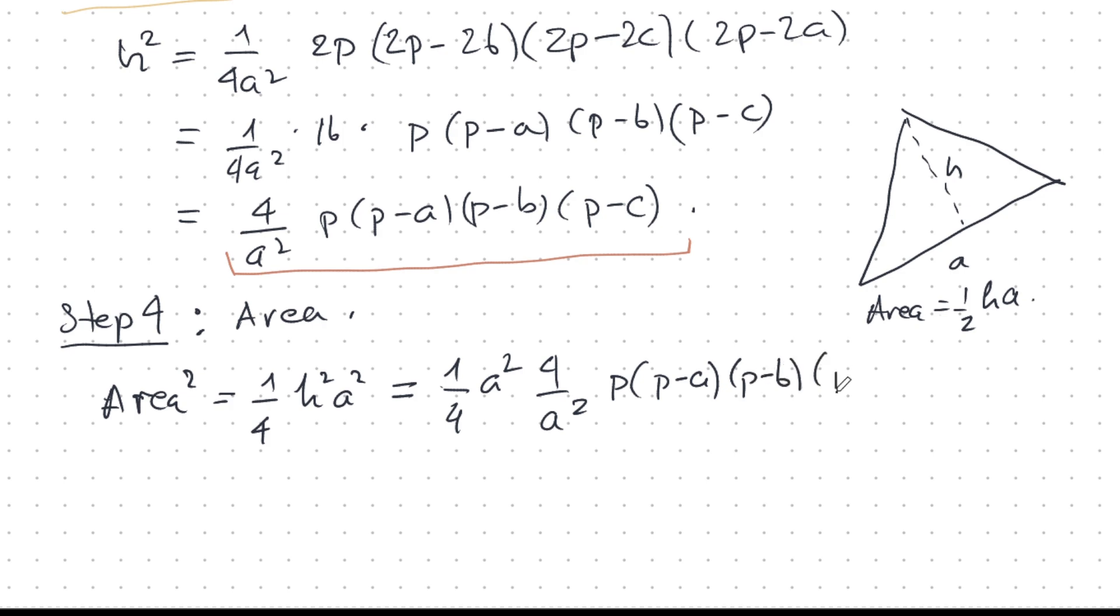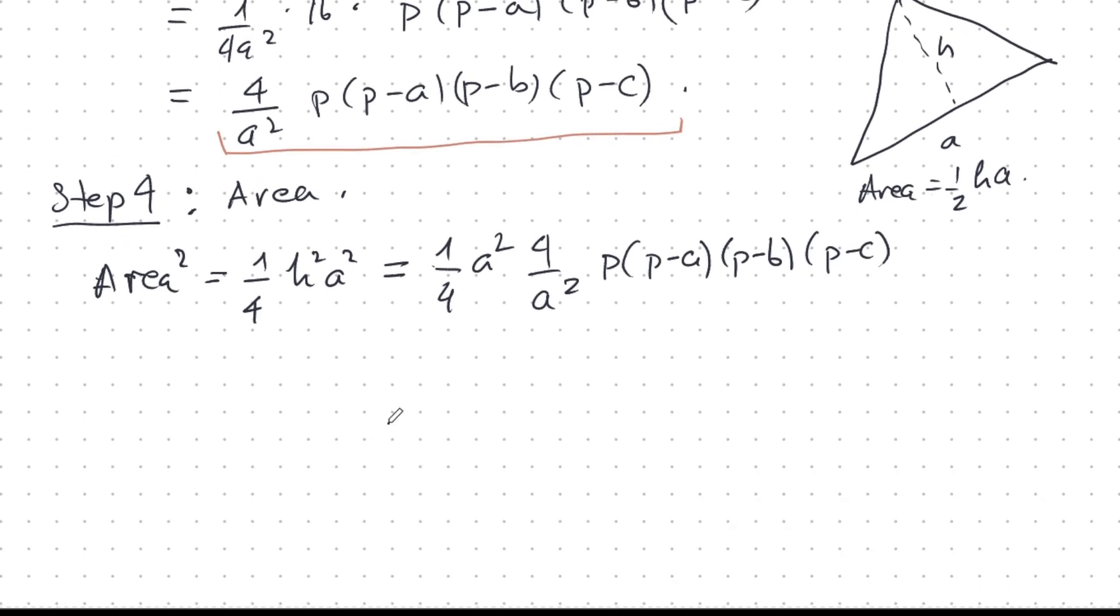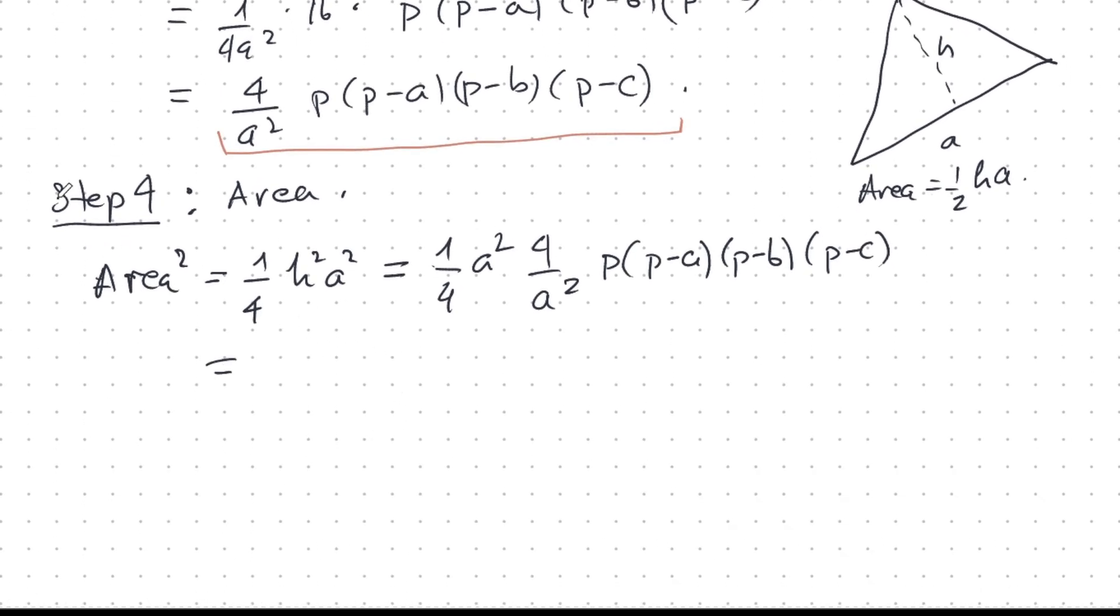P, P minus A, P minus B, P minus C. Very nice. Let's see what goes on now. This cancels with this. This cancels with this. And I'm left with this beautiful expression: P times P minus A, P minus B, P minus C. That's the area squared.